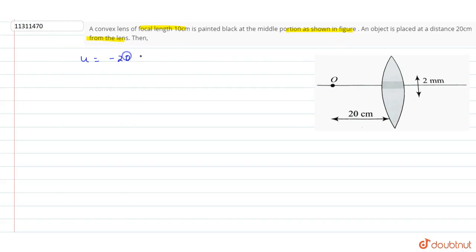So U is minus 20. For a convex lens, focal length f will be plus 10. And in this question, it's painted black at the middle portion.